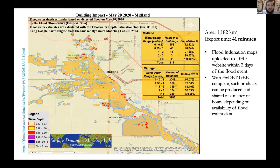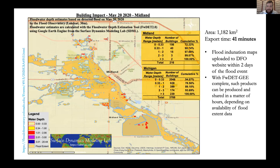Another product developed during this flood was a building impact assessment in Midland, Michigan, showing the number of buildings impacted and how deep the flood reached at each location. A large number of buildings were affected by floods ranging between zero and about a third of a meter. This area was 1,182 square kilometers, and the export time was only 41 minutes. These flood inundation maps were uploaded to the DFO website within two days of the flood event, and with the product now complete, these types of maps can be produced and shared in a matter of hours, depending on availability of flood extent data.